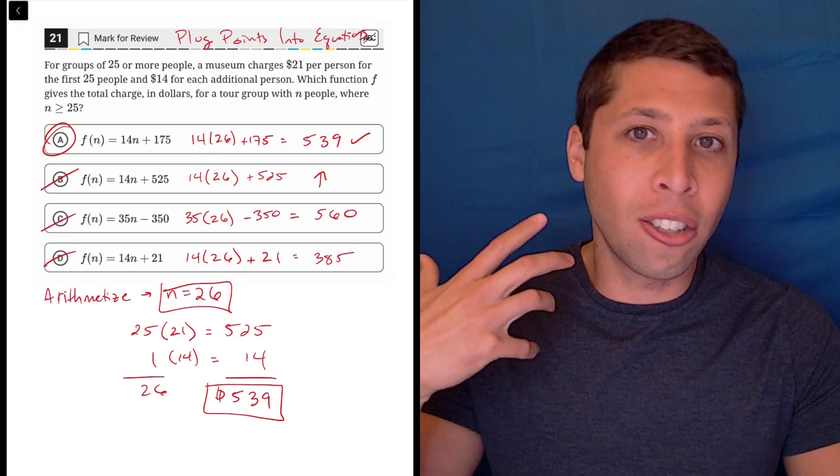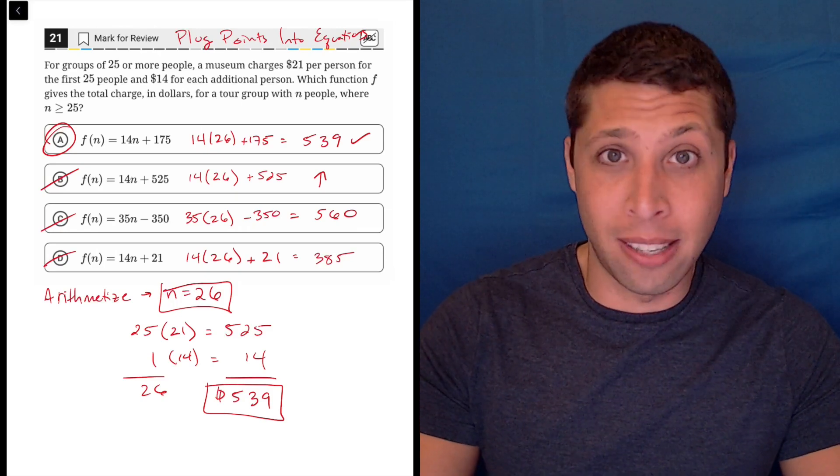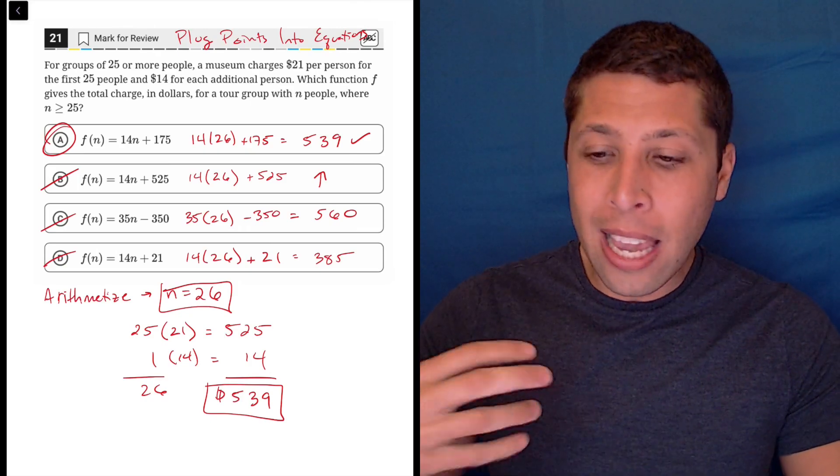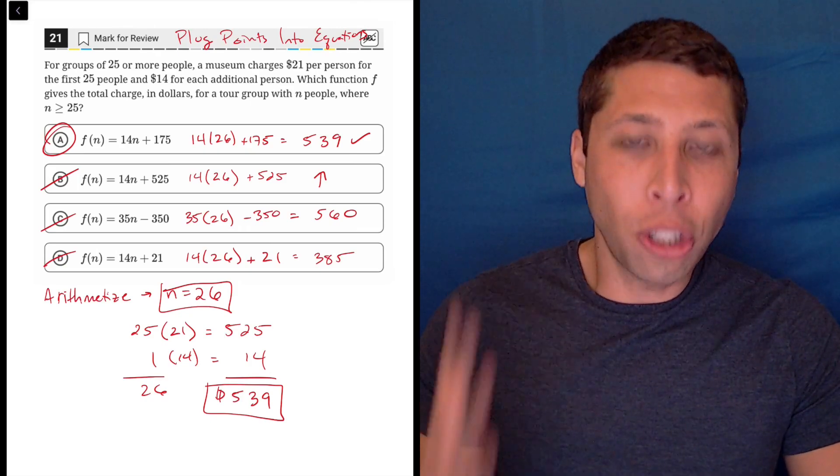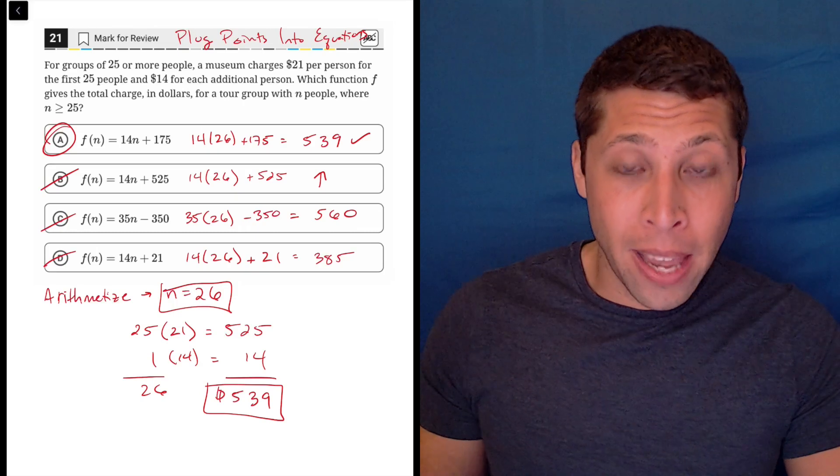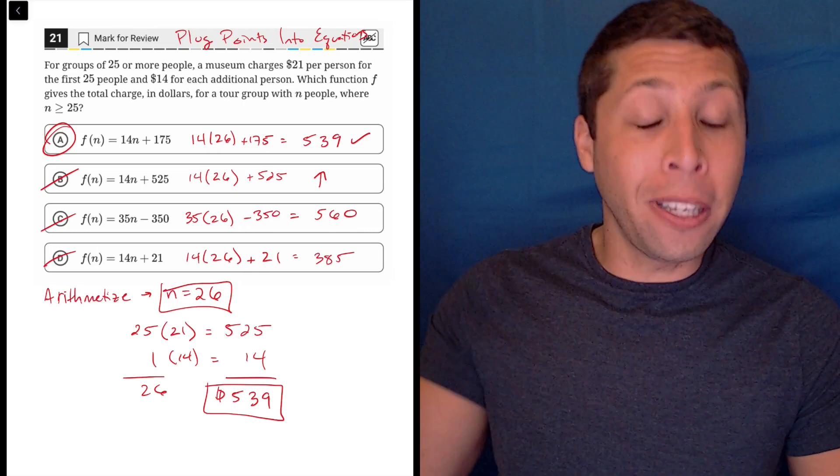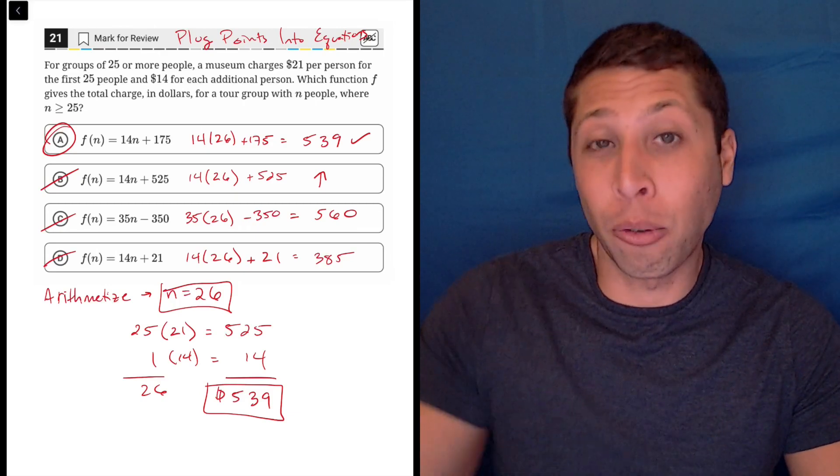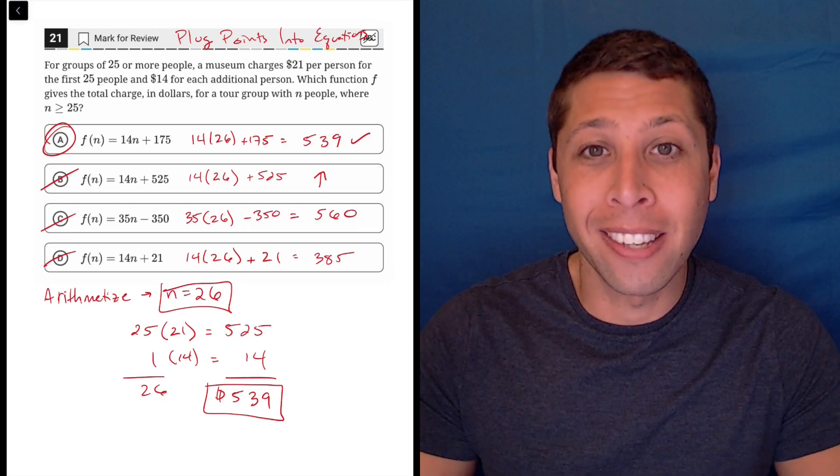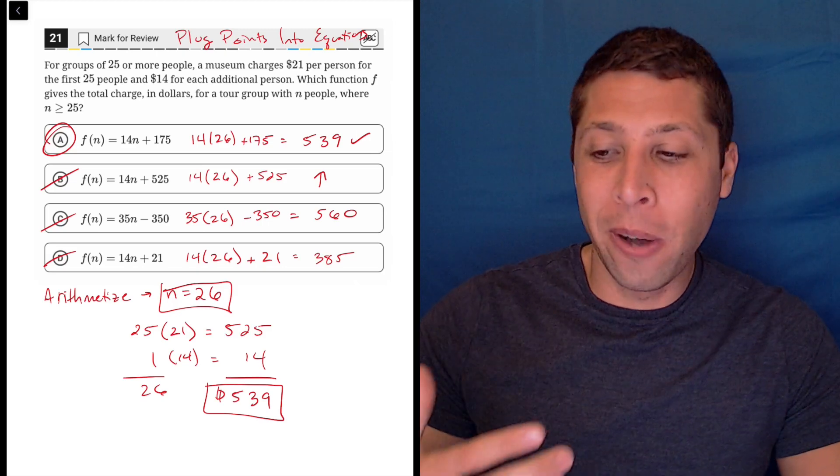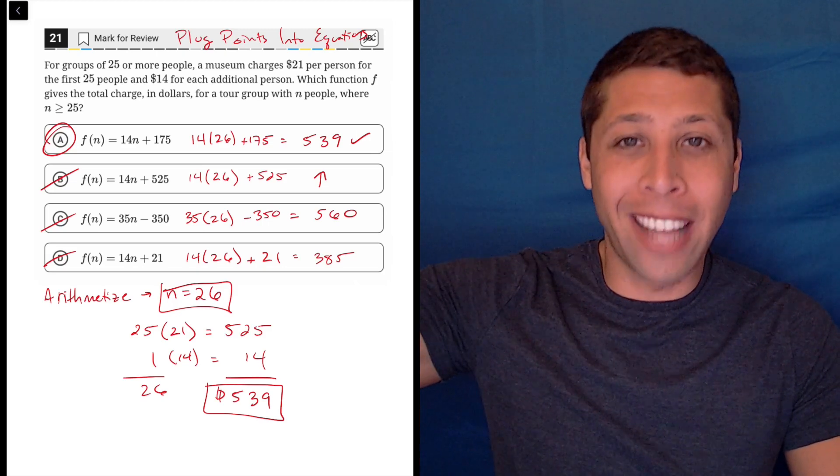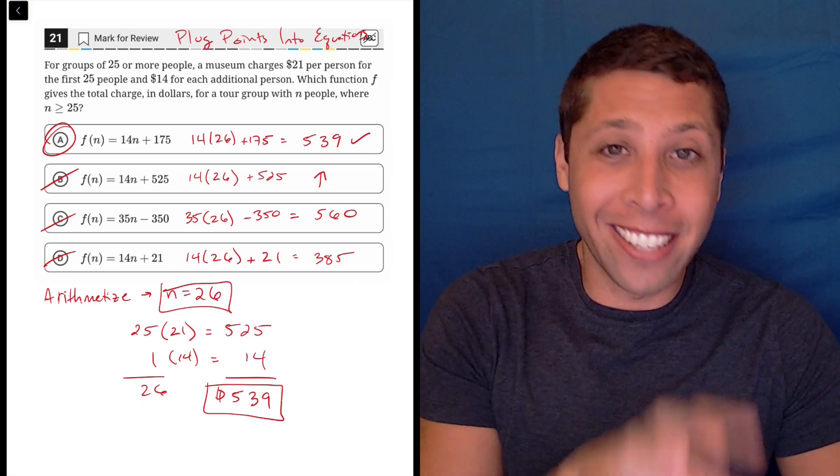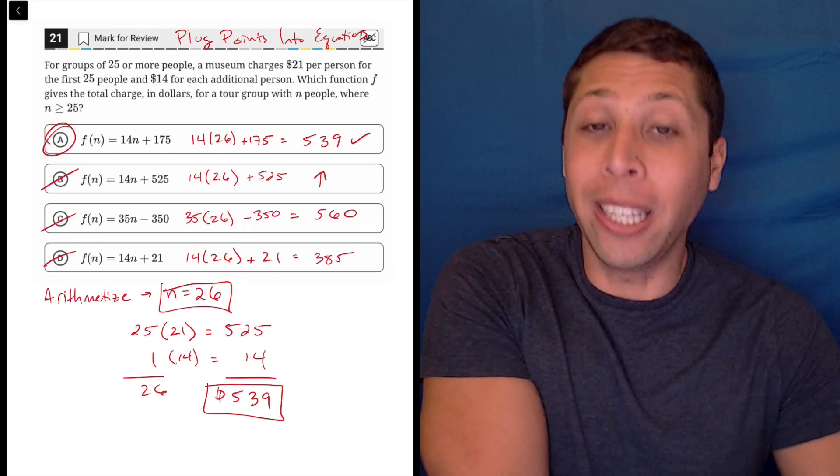And this is just a general rule of thumb on any SAT question where you have a story. In real life, you would not show up at this museum and say, we have n people in our tour group. How much is that going to cost? Can you give me an equation? No, you'd say I have 26 people in the tour group. What's the price? And they would tell you. So don't do algebra in real life. Don't do algebra on the SAT when the story is based on real life.